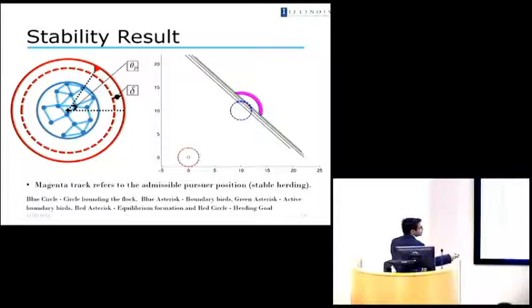So this is one of the simulation test cases, where you have a flock, the boundary of which is given by this, and you want the flock to be moved in this direction. So what you would do is that you would force the predator to be in this magenta track, and that would ensure that we move this flock towards the goal, and yet do not break the flock.